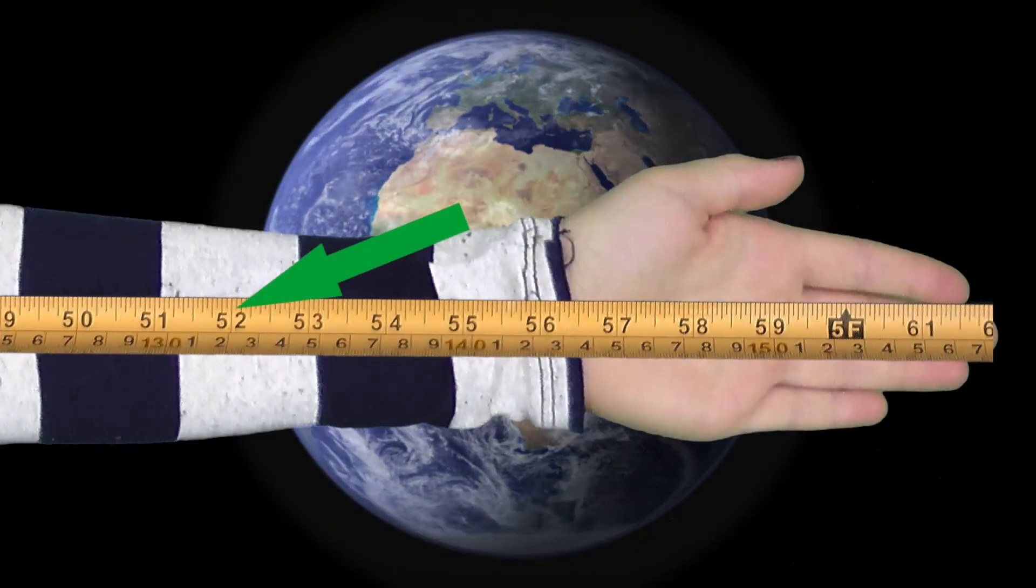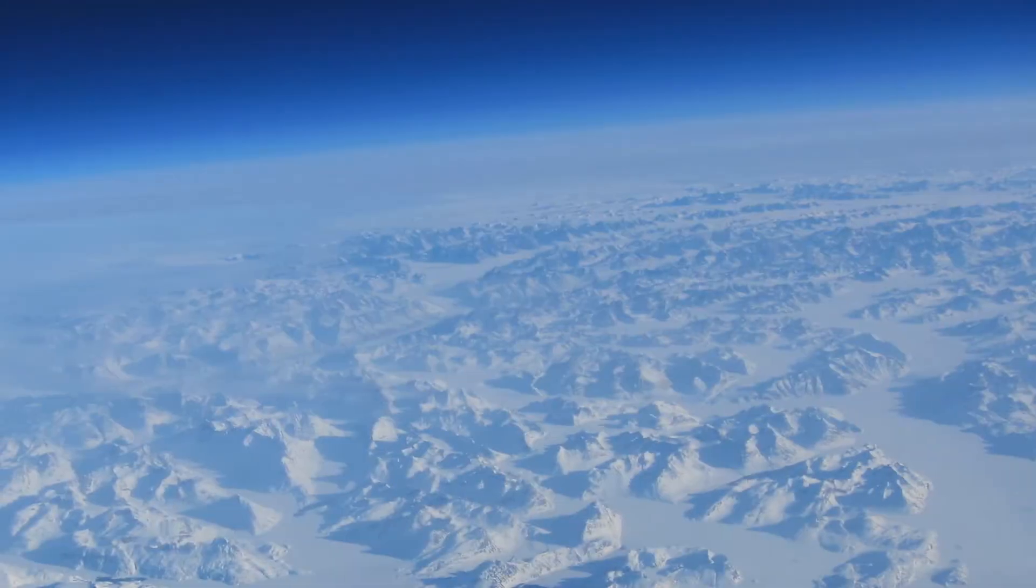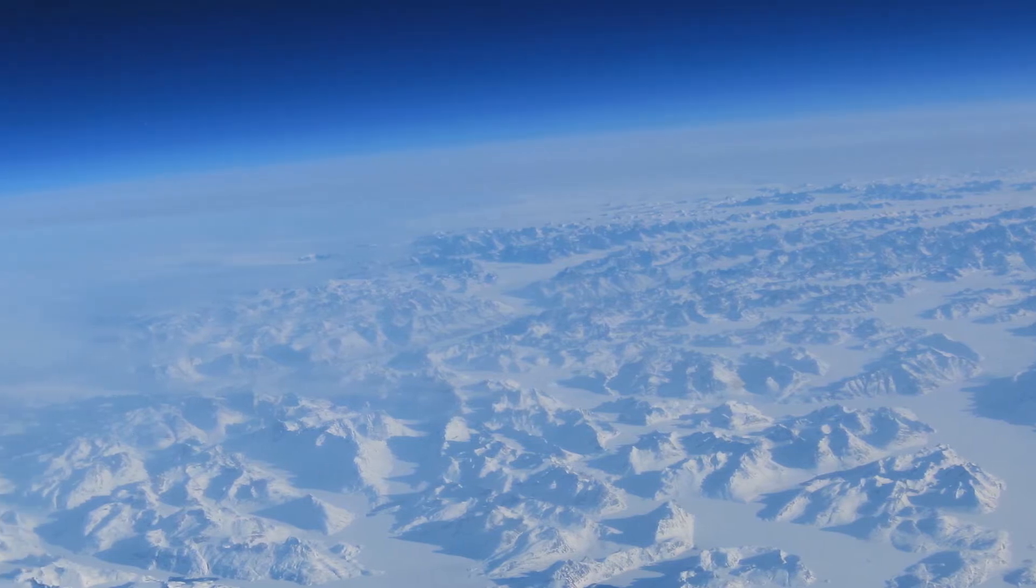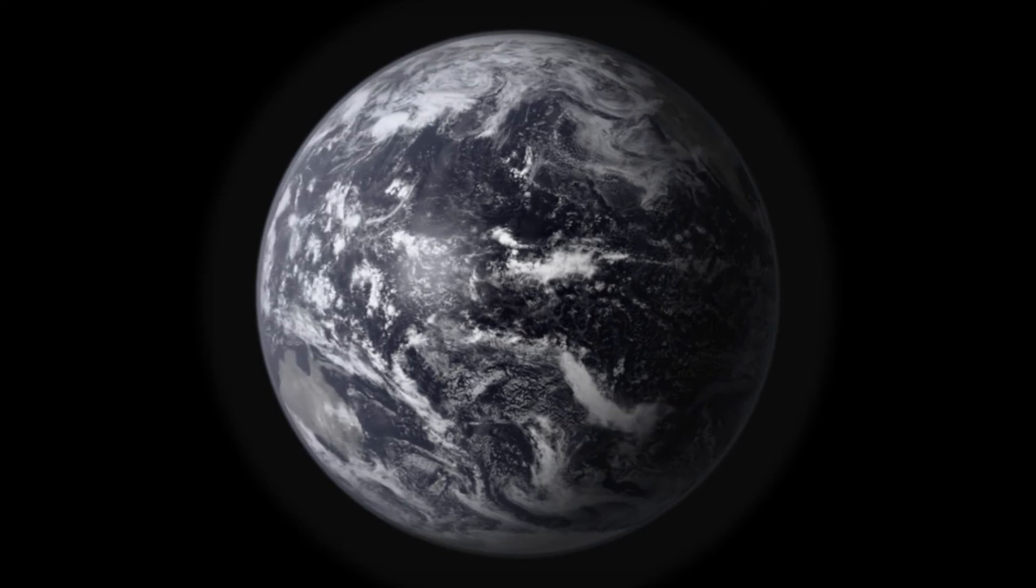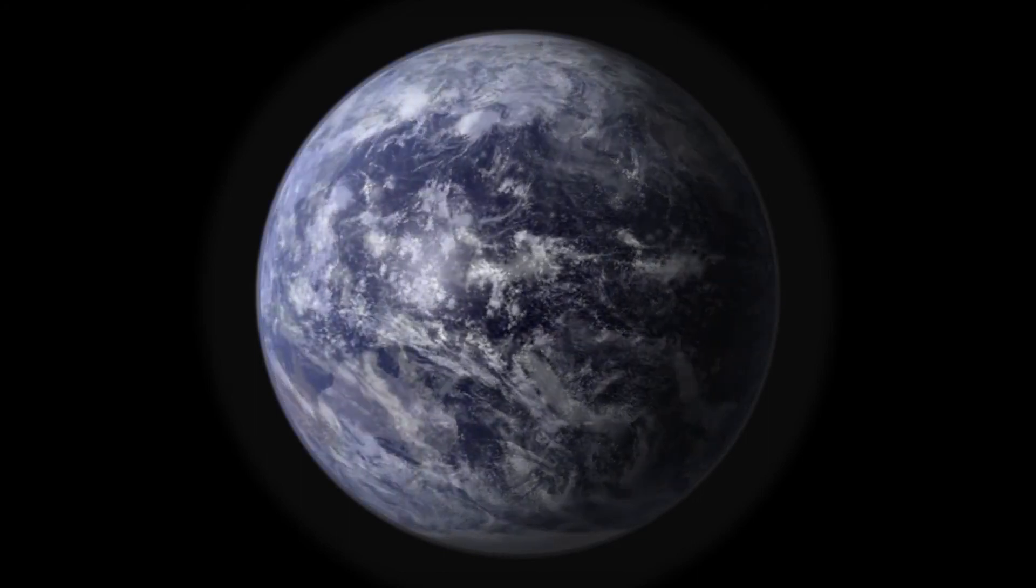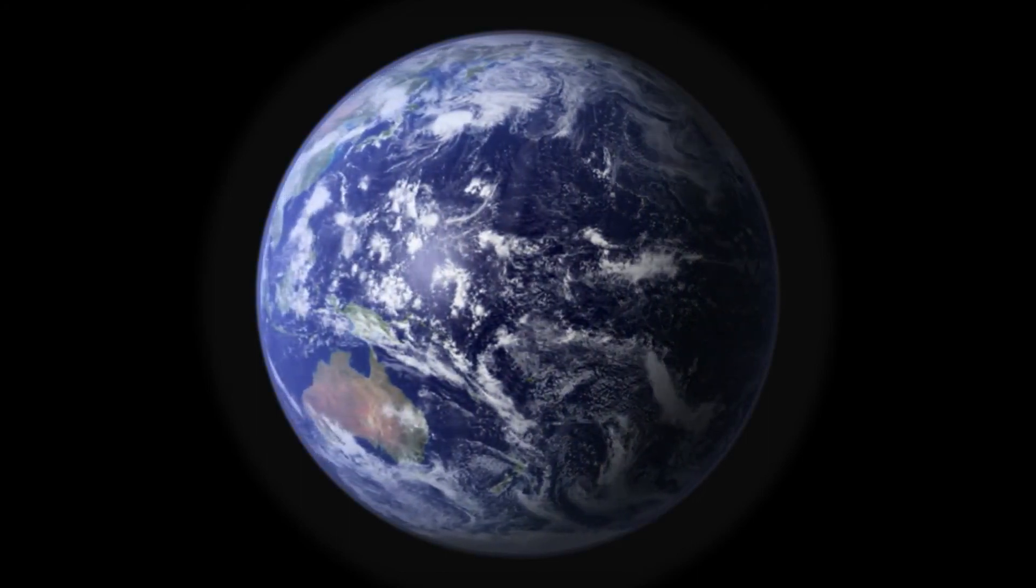At inch 52, the Earth freezes solid. Ice covers the oceans to a depth of a mile or more. This likely happens several times, possibly due to the arrangement of the continents. But eventually this period passes, and the Earth warms up again.